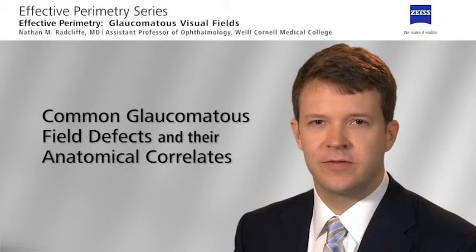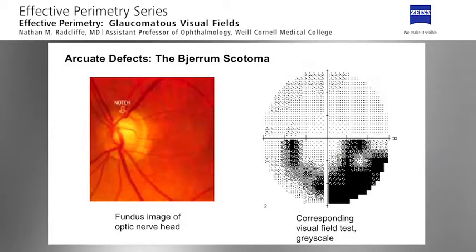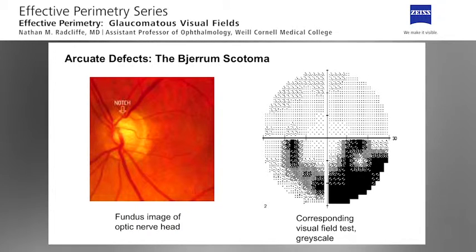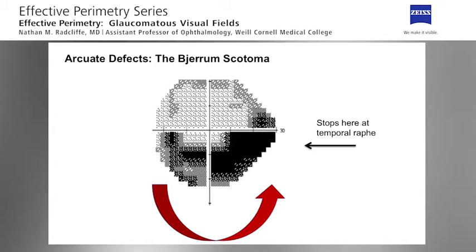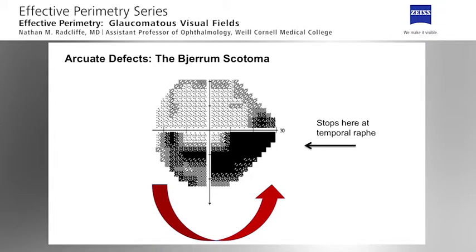Note that mixtures of defect types often occur in the same field. In arcuate defects, a deep focal notch at the optic disc will lead to loss of retinal nerve fibers in the area corresponding to the notch and therefore to an arcuate field defect often connecting to the blind spot. Classically, visual field loss progresses around the point of fixation and ends abruptly at the horizontal meridian corresponding to the temporal raphae — what is called a Bjerrum defect. Here is another classic arcuate defect in the left eye, with glaucomatous damage from the blind spot all the way to the nasal side, stopping at the horizontal raphae or midline.